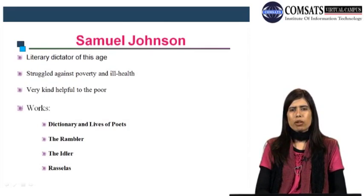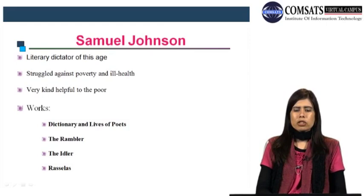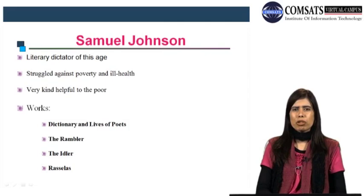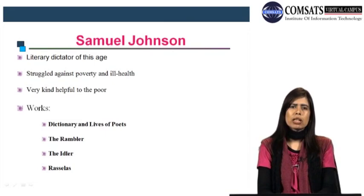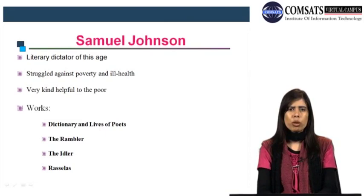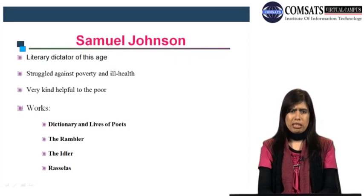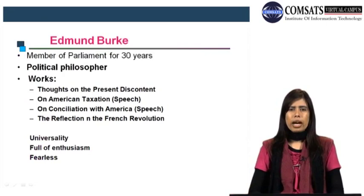Samuel Johnson, the literary dictator of the age, was the only prominent figure of that age. He struggled against poverty and ill health and was very kind and helpful to the poor. His eminent works are The Dictionary and Lives of Poets — based on biographies of all poets — and also The Rambler, The Idler, and Rasselas.